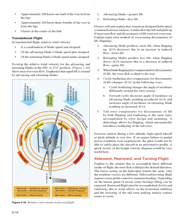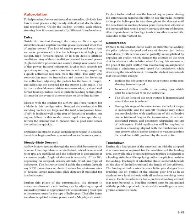Auto-rotation: to help students better understand auto-rotation, it is divided into four distinct phases: entry, steady-state descent, deceleration, and touchdown. Entry: guide the student through the entry or first stage and explain that this phase is entered after loss of engine power. The loss of engine power and rotor RPM are more pronounced when the helicopter is at high gross weight, high forward speed, or in high-density altitude conditions. In most helicopters, it takes only seconds for RPM decay to bring RPM to a minimum safe range, requiring a quick collective response. The entry into auto-rotation must be immediate and smooth by lowering the collective, adjusting the pedals for the loss of torque, and adjusting airspeed for the proper glide angle. The instructor should never initiate an auto-rotation unless there is a suitable landing area within glide distance in the event of a powerplant or driveline failure.